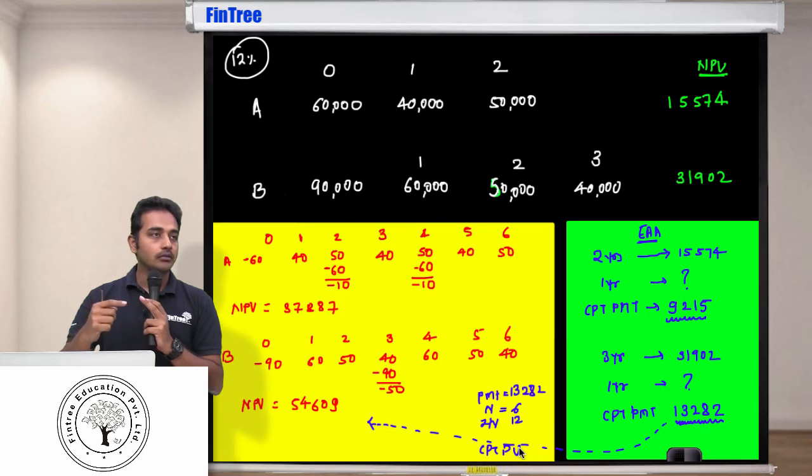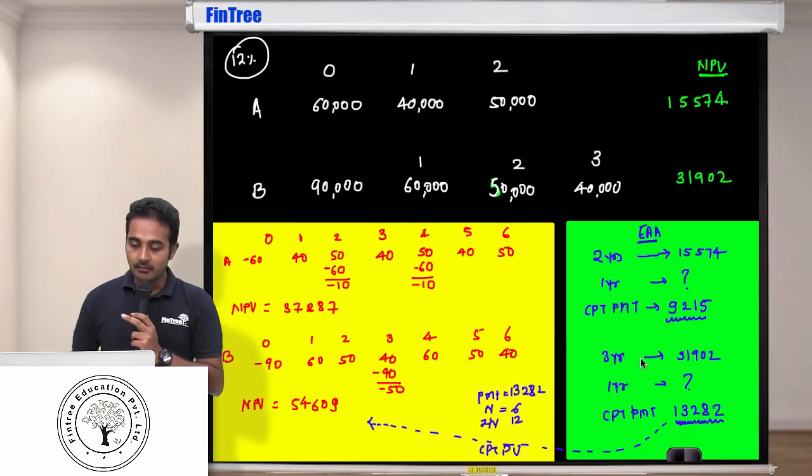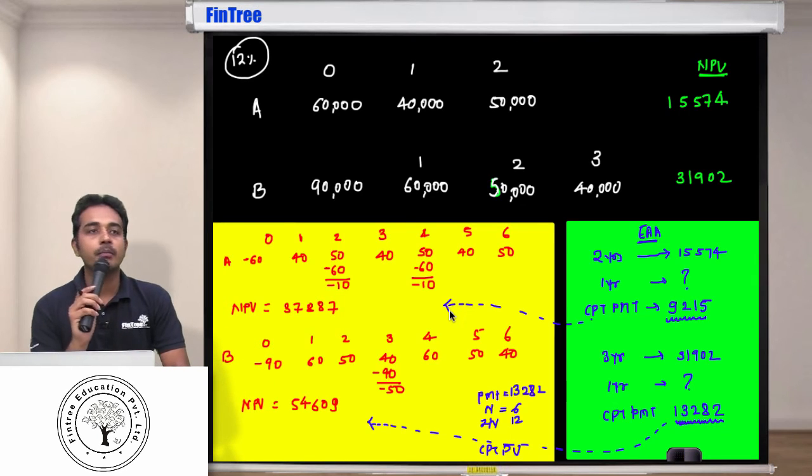But if I do project A for six years, then again my per annum earning is not going to change. So the same logic you can apply here as well. Just give it a shot. 9,215 would be your payment.